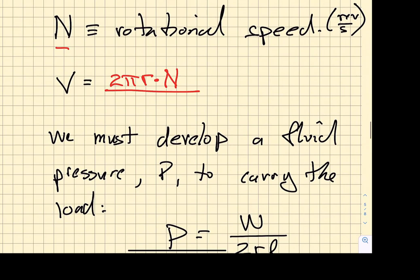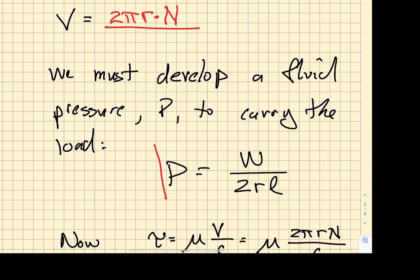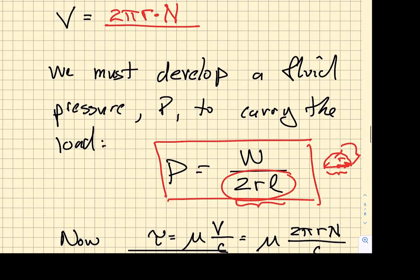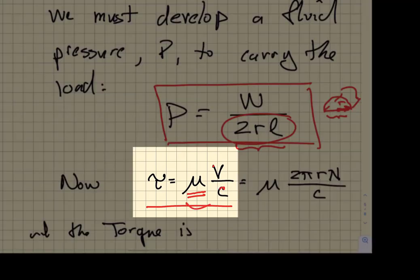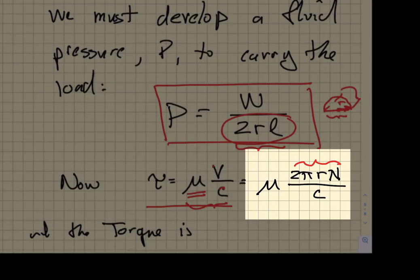So we must develop a fluid pressure to carry the load. We have already said that that fluid pressure P is going to be equal to the weight that is applied to the shaft, divided by the projected area over which you must carry that weight. That projected area is just the cross section of the shaft, and that joint spans a length L. So we have a very simple relationship between the pressure and the weight that we must carry. Now we already said the shear stress is related to dynamic viscosity through the velocity difference between the journal and the fixed bearing surface, and we divide that by the clearance C. We have this nice relationship. We've said that the velocity is 2πrn, and so the shear stress is going to look like this term right over here.